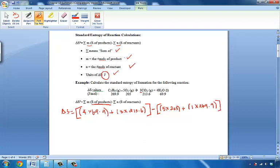All right, so, let's see what we get here. All right, we've got four times 69.9, which is 279.6. Plus, three times 213.6 is 640.8. That's the sum of our products. Minus the sum of our reactants. Five times 205 is 1025. Plus, one times 269 is 269.9.